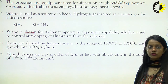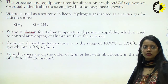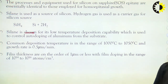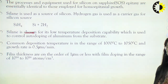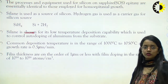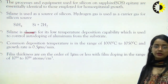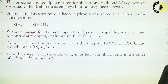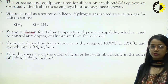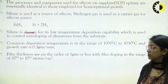The process and equipment used for silicon on sapphire epitaxy are essentially identical to those employed for homoepitaxial growth. It is a well-known silicon on sapphire process.